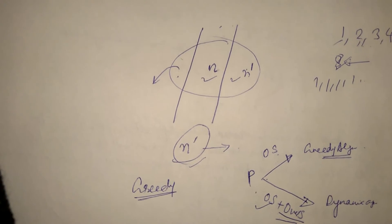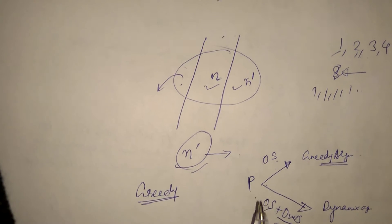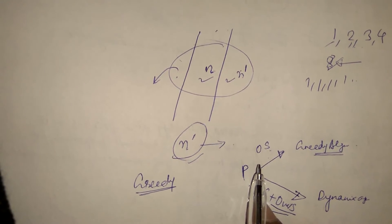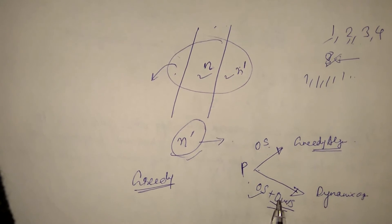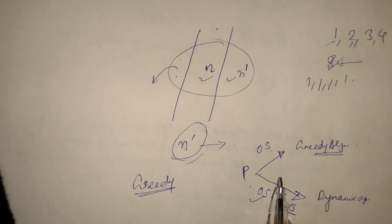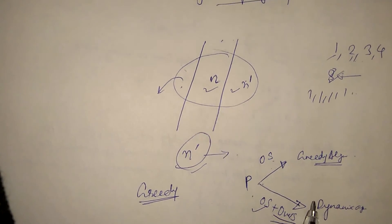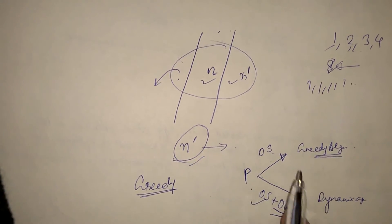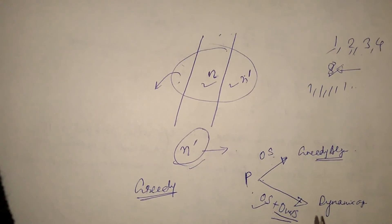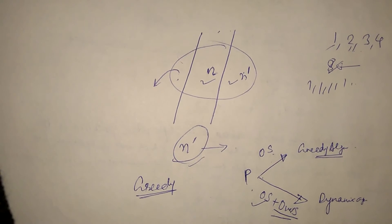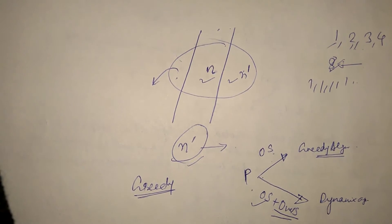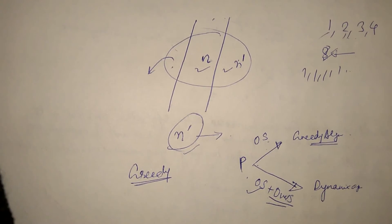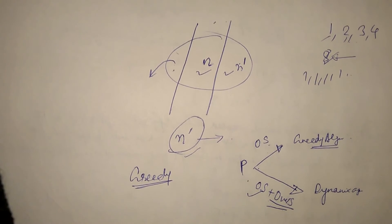Now if a problem doesn't have optimal substructure at all, then do not use greedy or dynamic programming — just use a straightforward search for the solution. A naive approach may be best in that case.